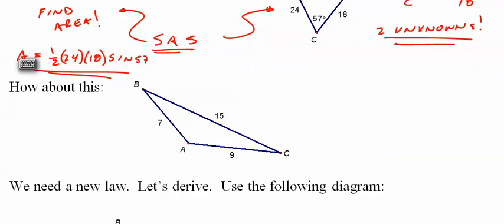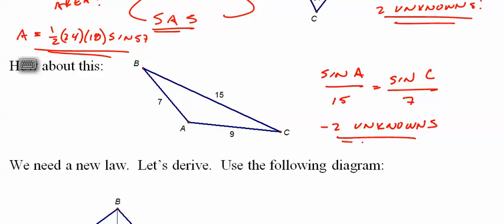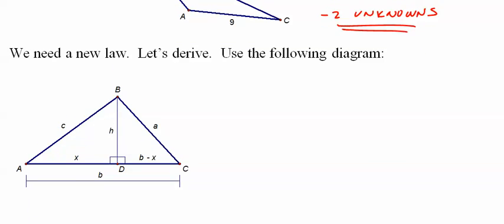So here's another one. If we did an angle we'd do sine of, pick a random one, A over 15 would be sine of, pick another random one, I'll pick C this time, over 7. And again we have two unknowns so we can't actually solve these. New law, it's called the law of cosines.